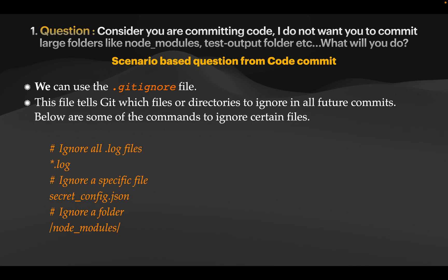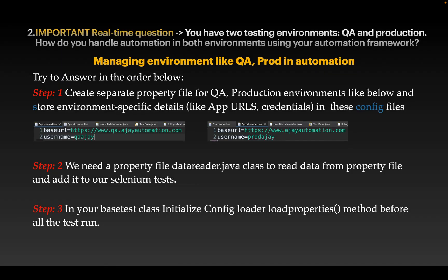The next question: you have two testing environments, QA and production. How do you handle automation in both environments using your automation framework? As a QA engineer, we work in different environments — QA, staging, or production — and handling automation across all these environments is very critical to your project.